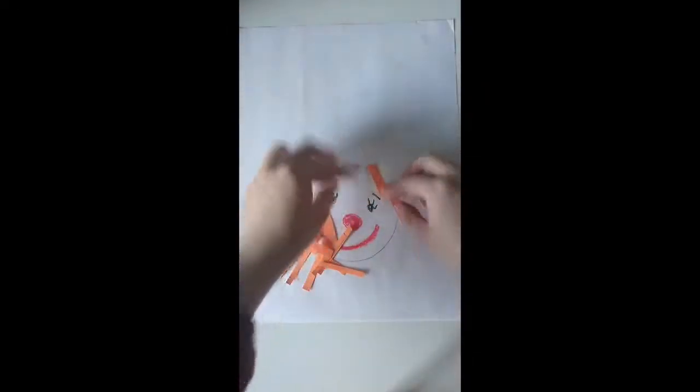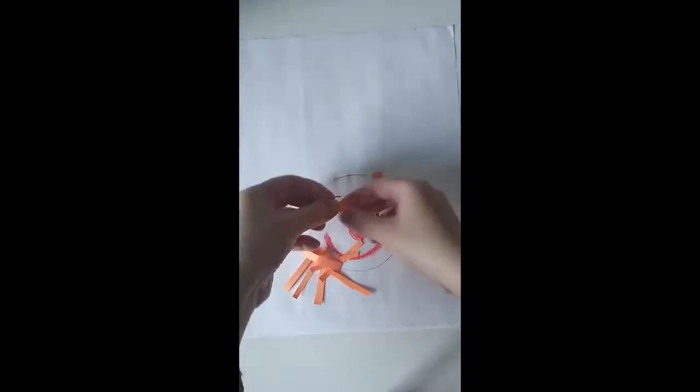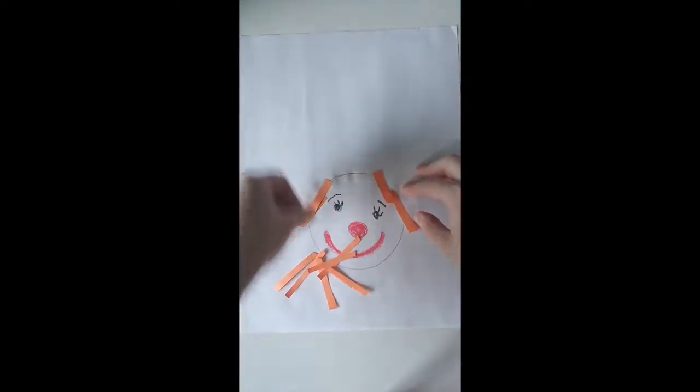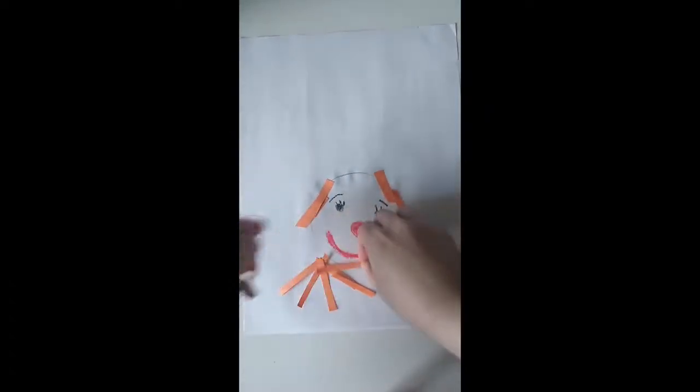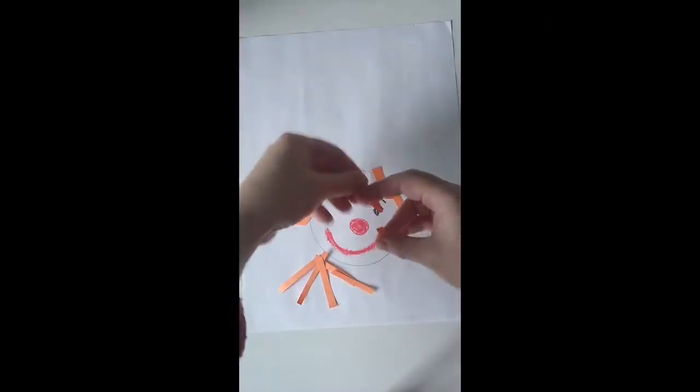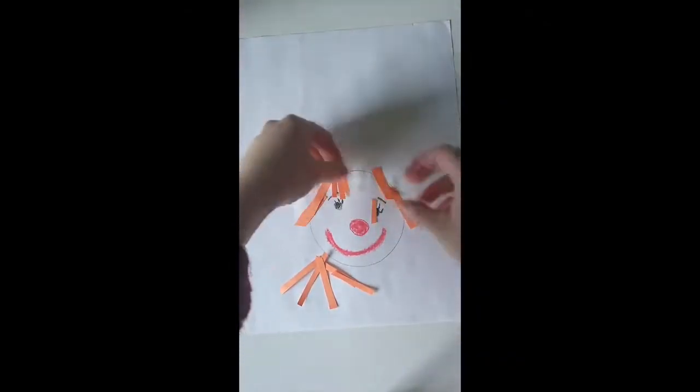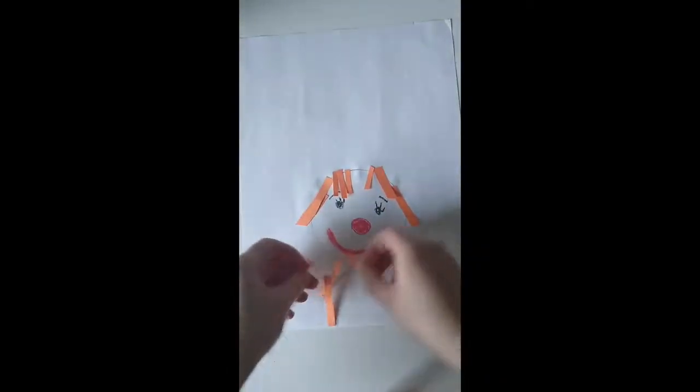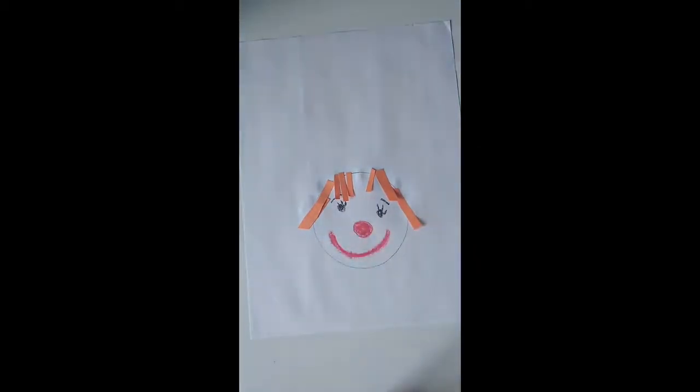So maybe we'll give him some on the sides, some bangs maybe. Let's see how much we can fit here. And we can make them a little shorter, because they may be a little too long. Give it a little haircut. So, and you can always add a little more later, if you decide to, needs more hair, or if he needs less hair, you can probably take it off if it's still not dry.